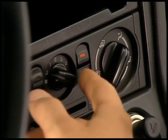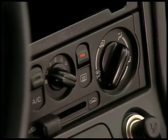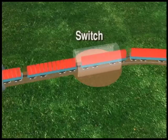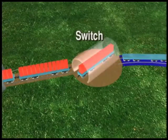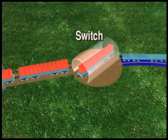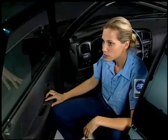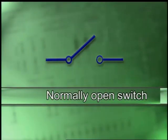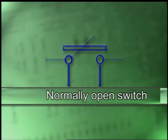Switches are used to turn a circuit or load on or off. A switch allows current to flow through a circuit when it is closed and does not allow current to flow when it is open. The symbols for switches vary depending on the type. A normally open switch that is usually off is shown as an open gate or as a rectangular bar over two circles, shown as outlines only.